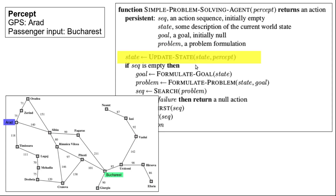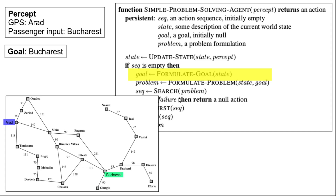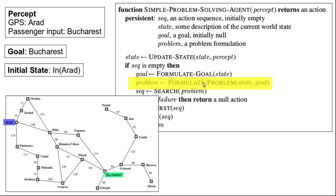Using the current percept, we update our state. The new state tells us we are currently in Arad and our destination is Bucharest. Next, we use that state to formulate the goal. Since the passenger has input Bucharest as the destination, in the formulate-goal step we decide our goal is to be in Bucharest.